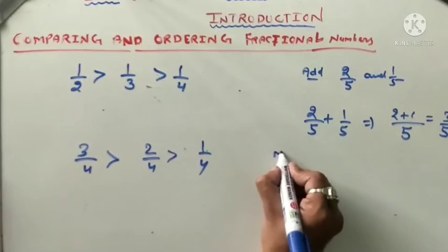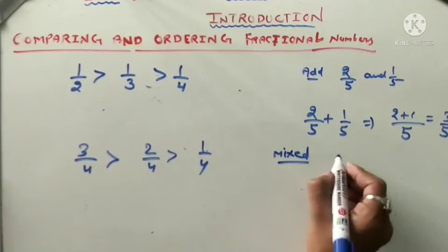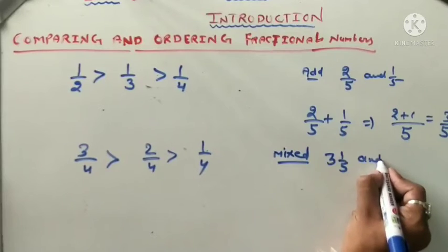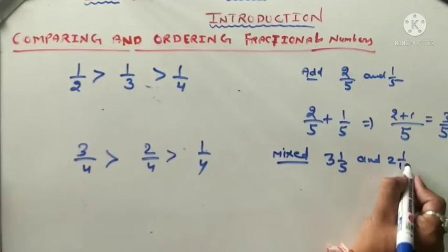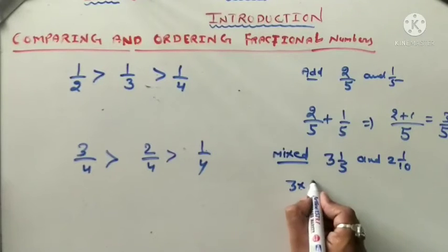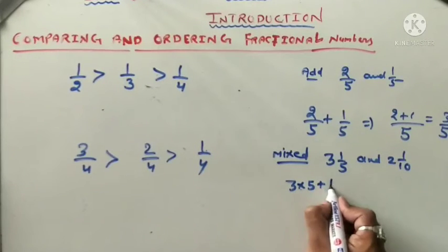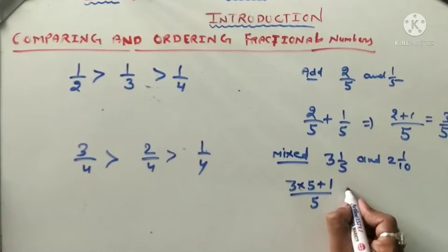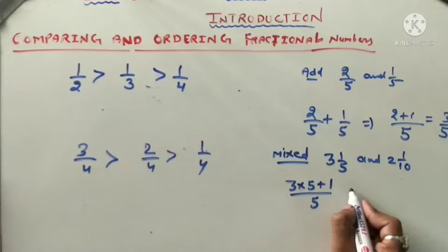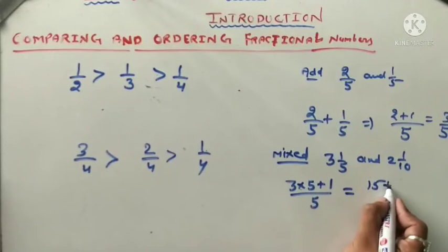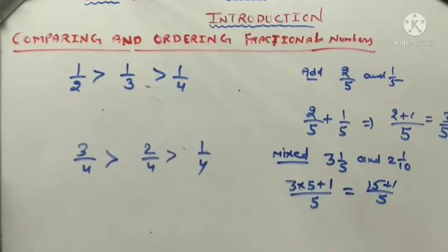If we have mixed fractions, like three and one upon five, first multiply 3 by 5 and add 1: that gives 16 upon five. For two and one upon ten, multiply 2 by 10 and add 1: that gives 21 upon ten.